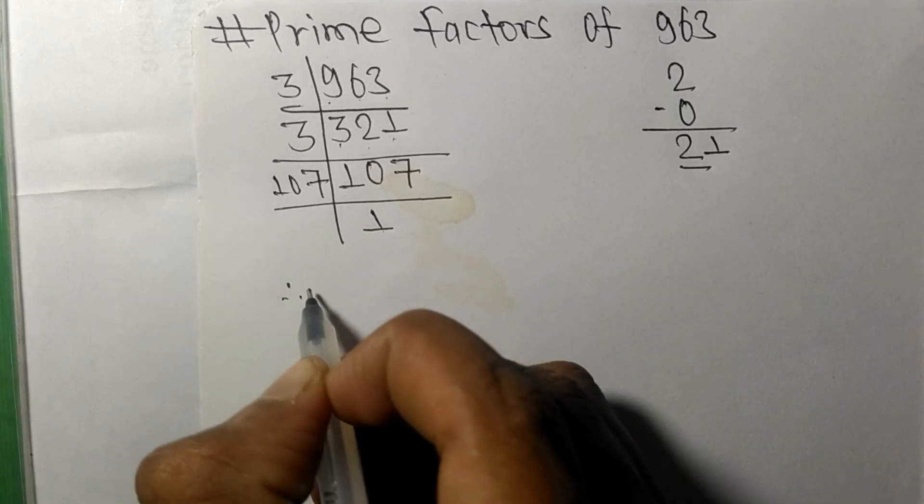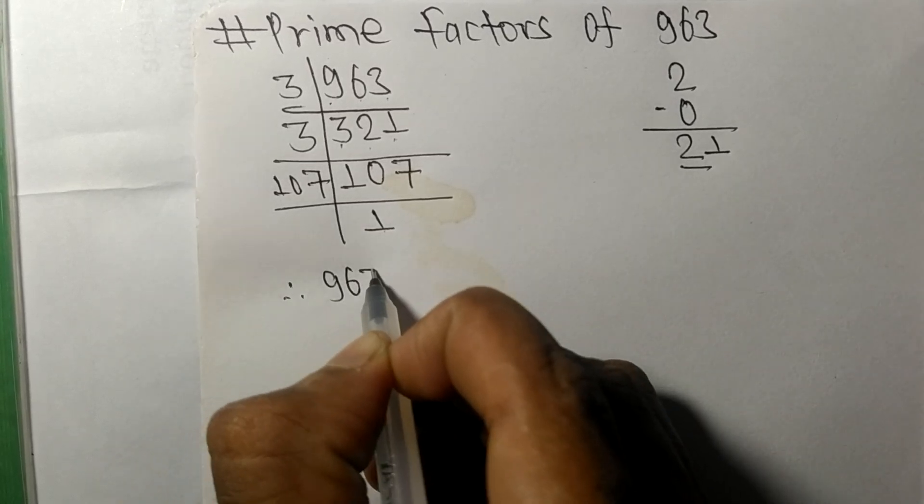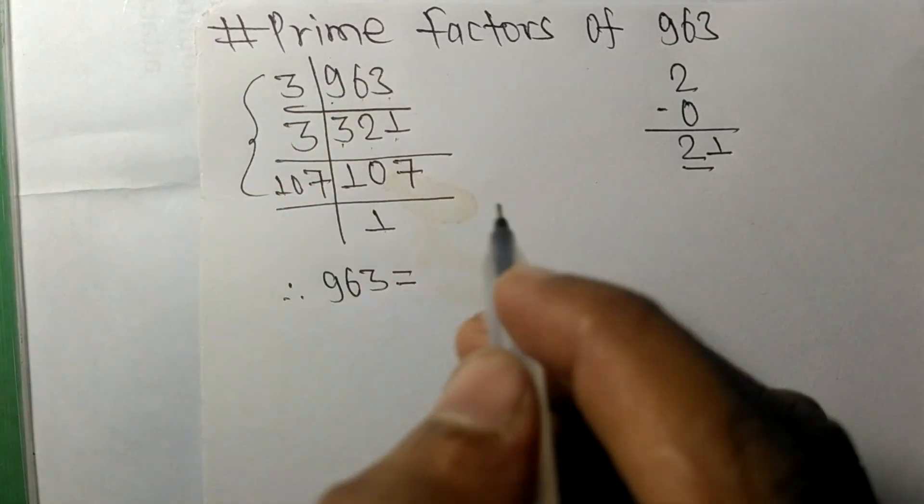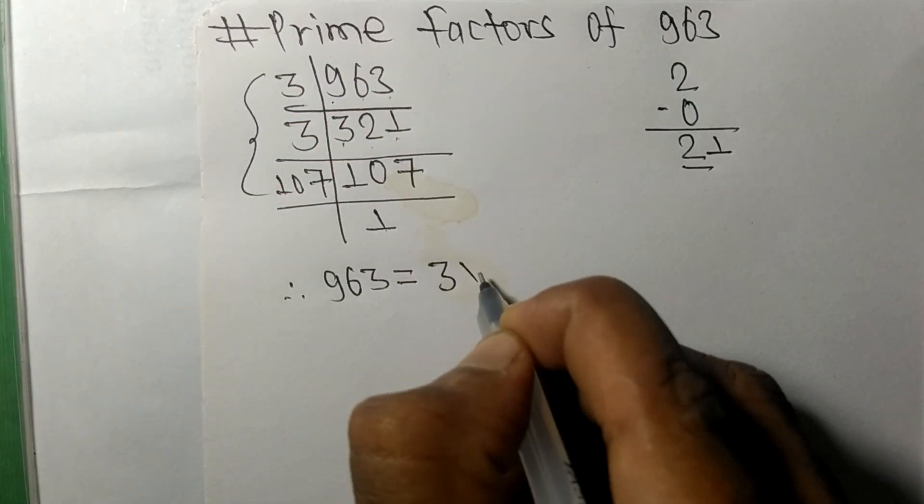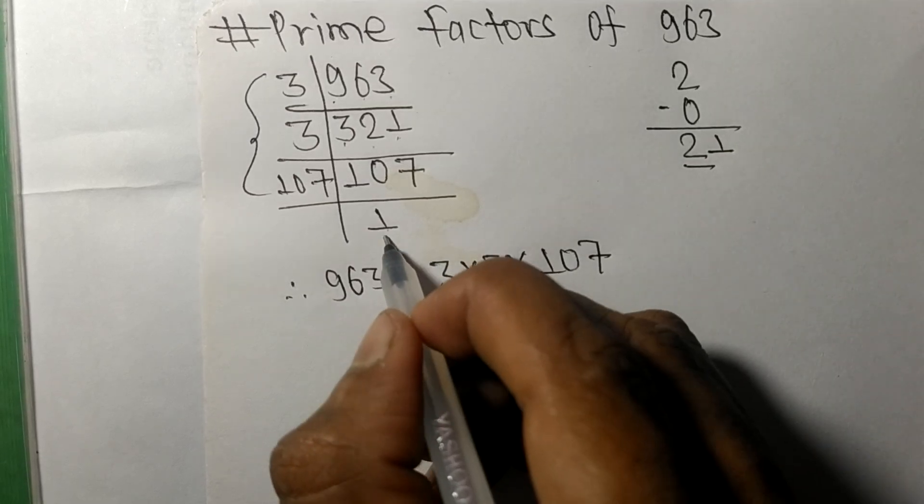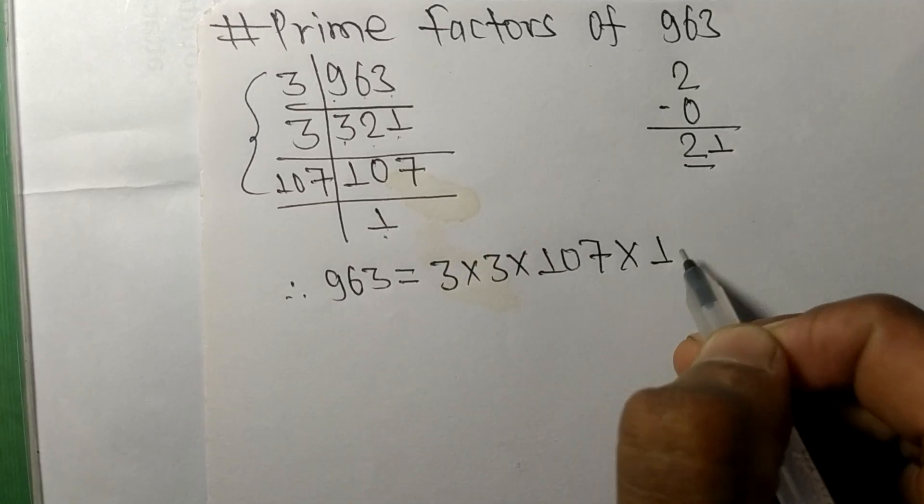Therefore, 963 is equal to, from this side it is 3 times 3 times 107, from here it is 1.